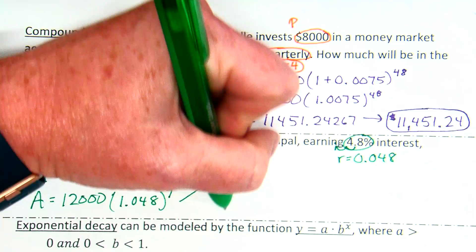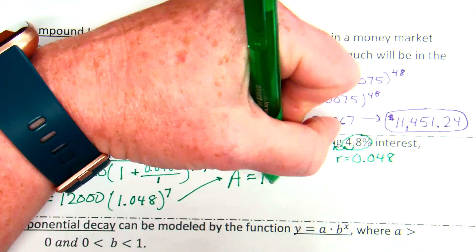12,000 times 1.048 raised to the 7th equals 16,661.35142. Did you get it? Okay. So, again, we're talking interest, so we're talking money. $16,661.35.